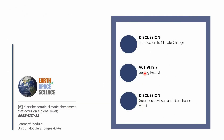That is it for Session 9 of Earth and Space Science. We were able to discuss the introduction to climate change, finish Activity Number 7: Getting Ready, and complete a discussion on greenhouse gases and greenhouse effect. We are still working on the sixth learning competency: describe certain climatic phenomena that occur on a global level. This has been Sir CJ, and I hope to see you in the next video of this session.